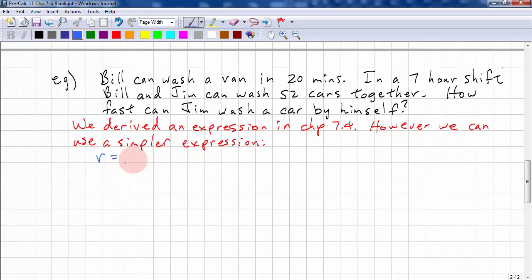We'll say rate equals work over time. So, rate for Bill is one van in 20 minutes. Because it tells you he washes a van in 20 minutes. And Jim is, we don't know what it is, but he'll wash it in J minutes.